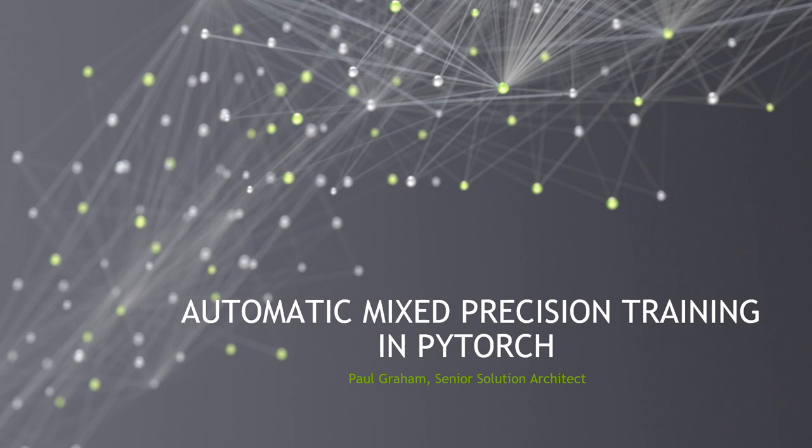We're going to focus on PyTorch today, though there are similar efforts for automating Mixed Precision Training in both TensorFlow and MXNet. I'm going to be talking about a tool that NVIDIA has written that has now been incorporated into native PyTorch. Originally we had an extension called Apex for automatic Mixed Precision, but because this became so important and commonly used, it's now been incorporated into native PyTorch. This automatic Mixed Precision, or AMP, enables you to take advantage of Mixed Precision Training automatically by adding just a few lines of Python to an existing trainer script.